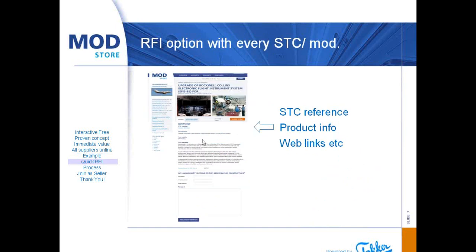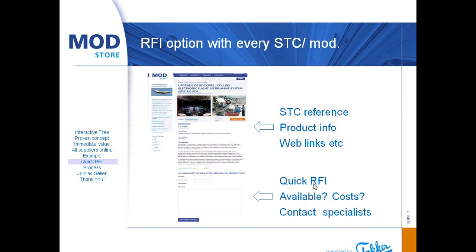It provides information on the modification, SSC reference if relevant, product info, web links, YouTube pictures, and you can use the quick ARV request for information functionality below to get availability, costs, and contacts with the modification specialist or SDC holder.